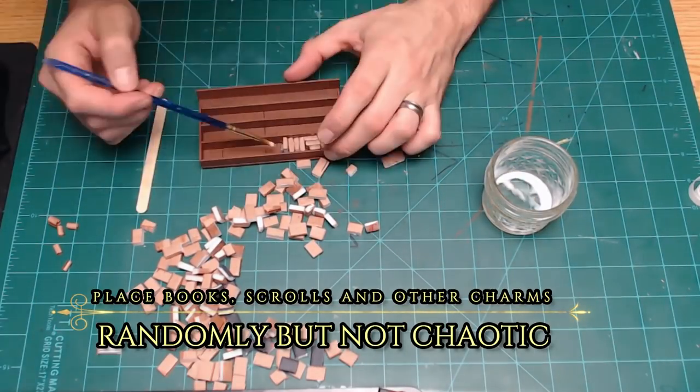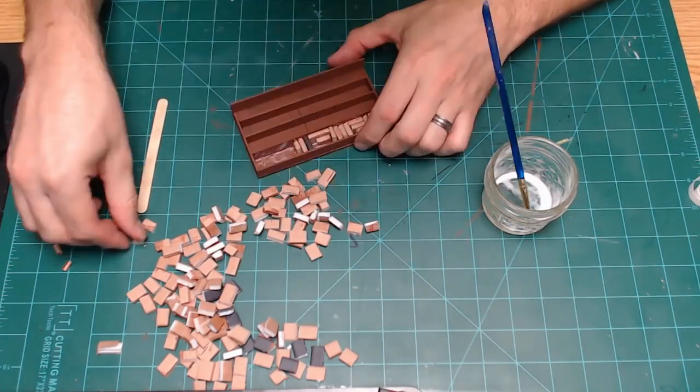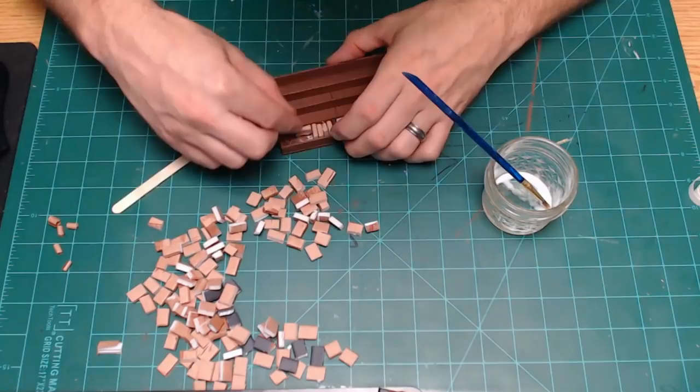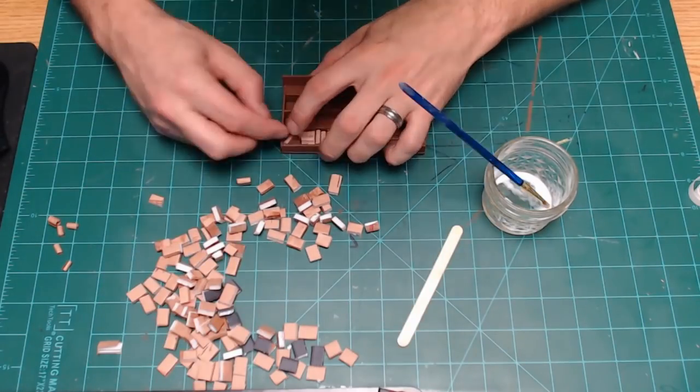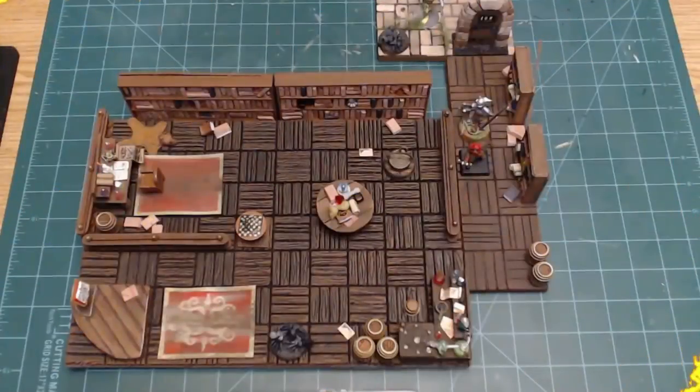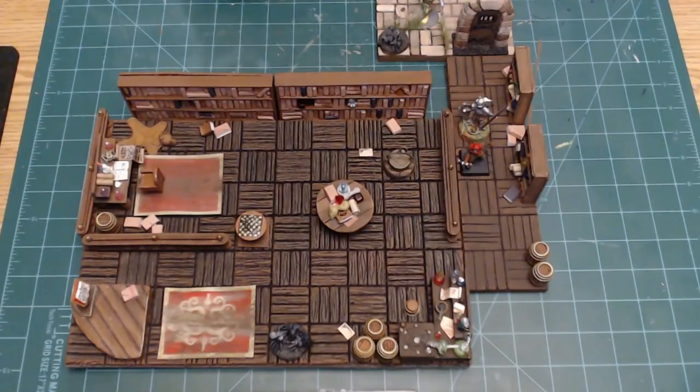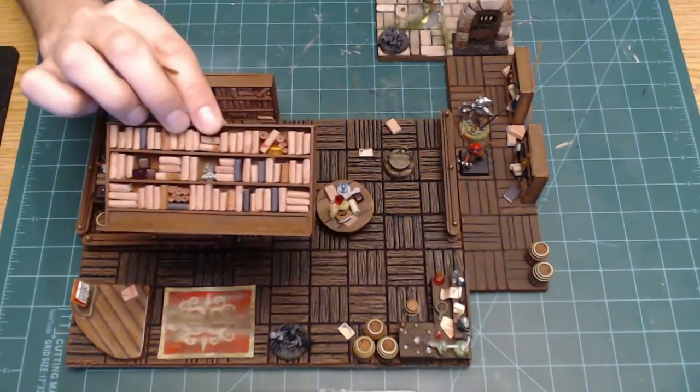Here we are just putting PVA glue, gluing to the shelf, book to book, so nothing falls out. I'm not going to paint these immediately. I kind of like them how they are. I kind of like that library look and not so much like fantasy everything's red, purple and green books kind of thing.